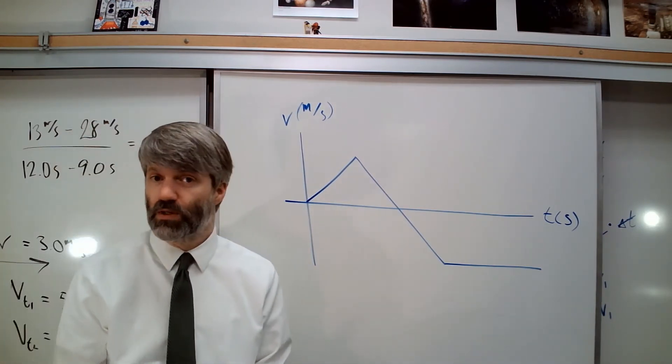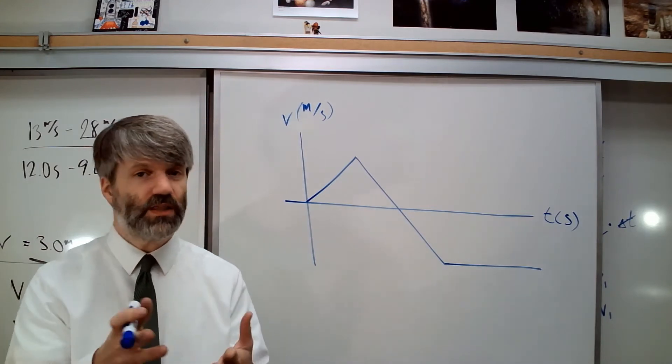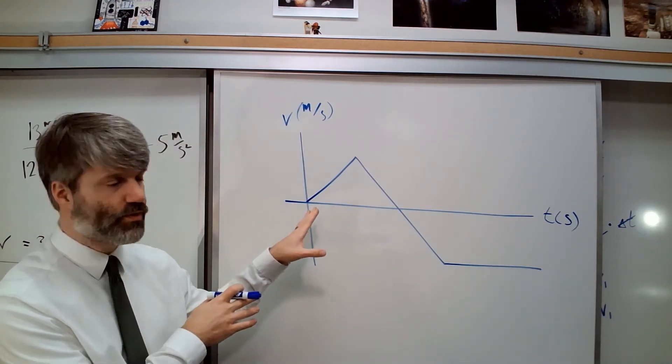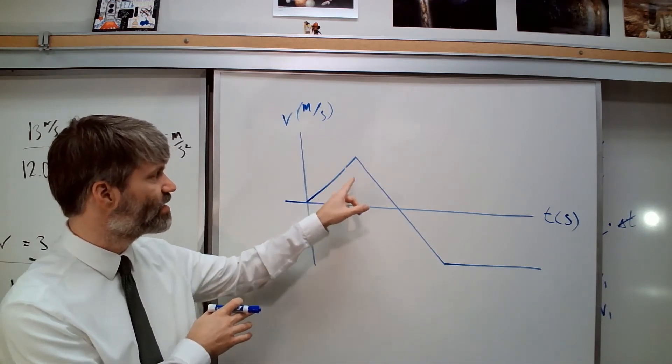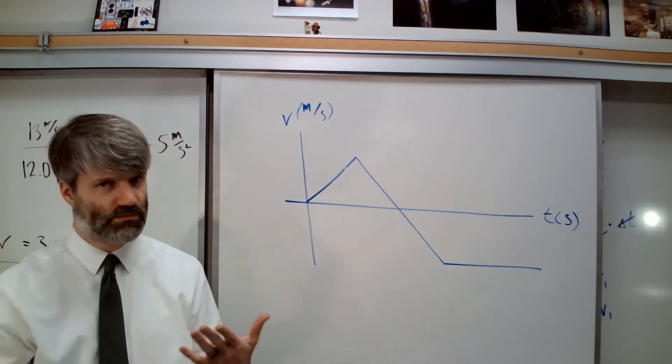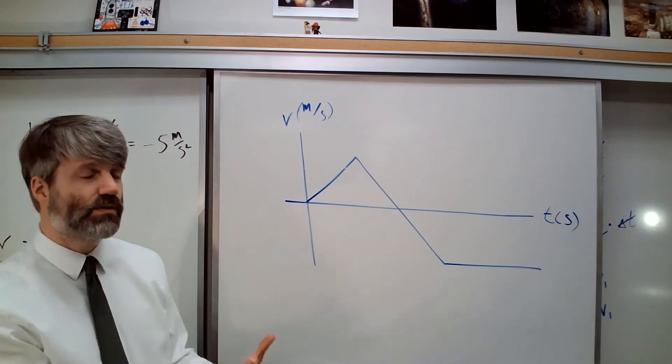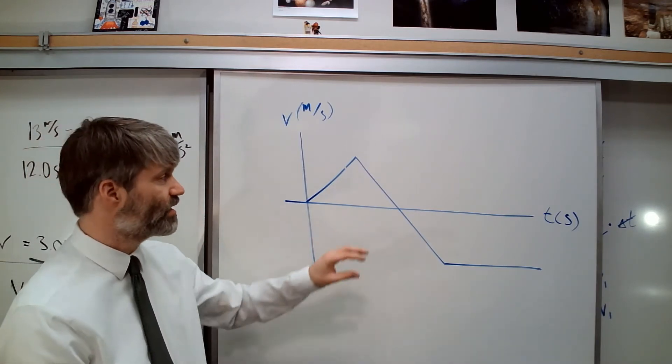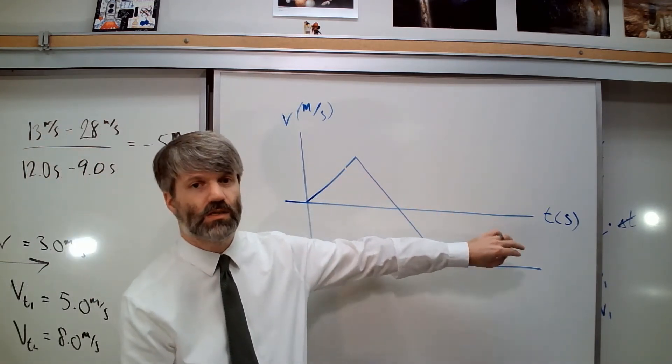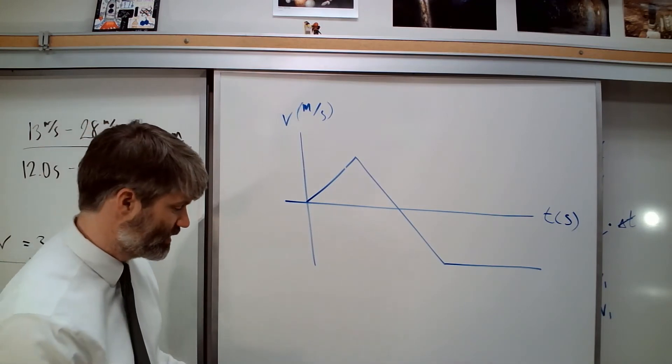Now, one thing we know from the velocity versus time graph, we can find the velocity at just the face value of the graph. At time t, the velocity is whatever that is, just reading a graph. We know, too, that we can find the displacement of the object by finding the area under the curve in those places.